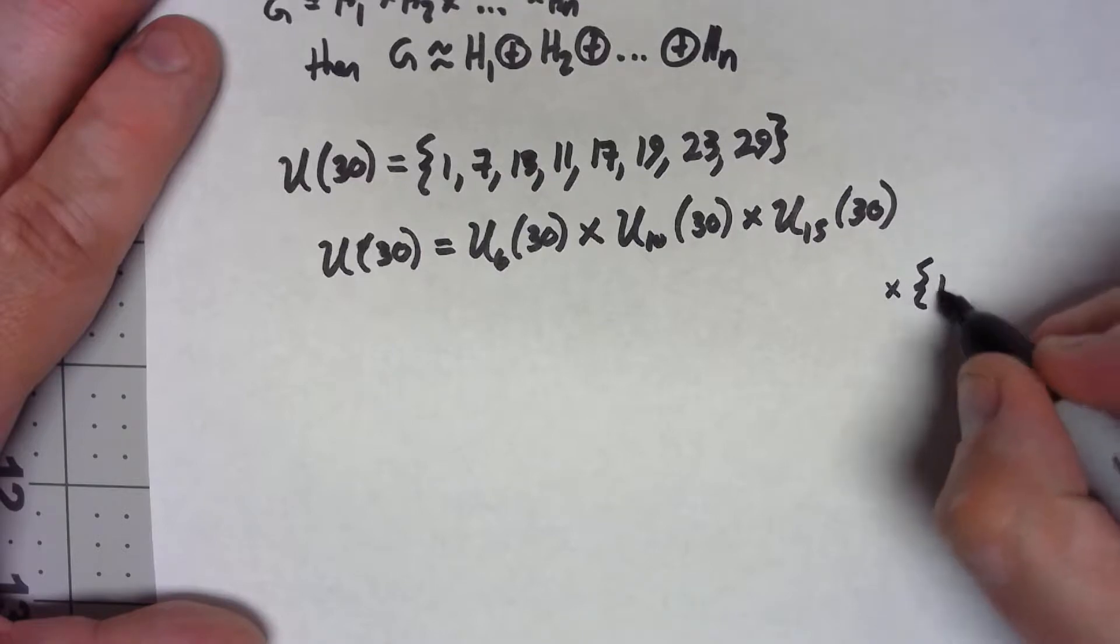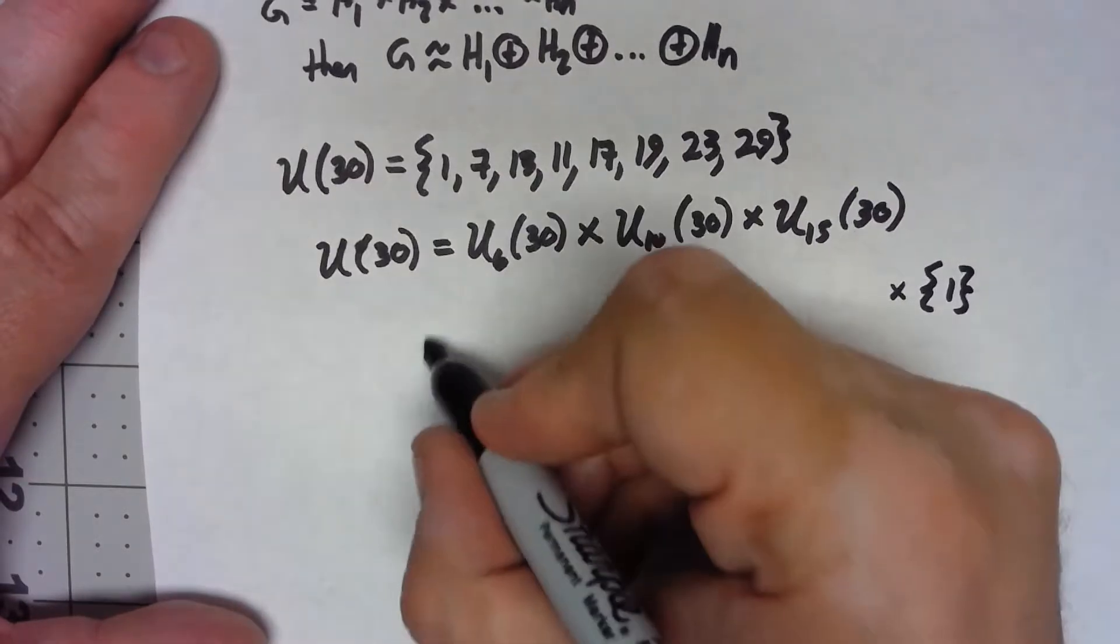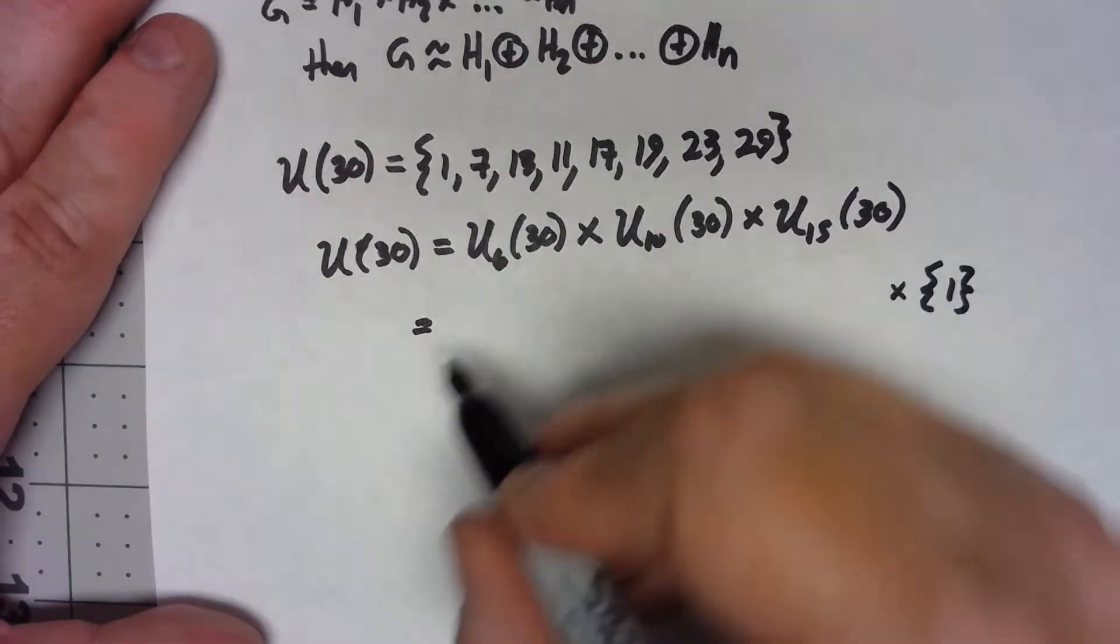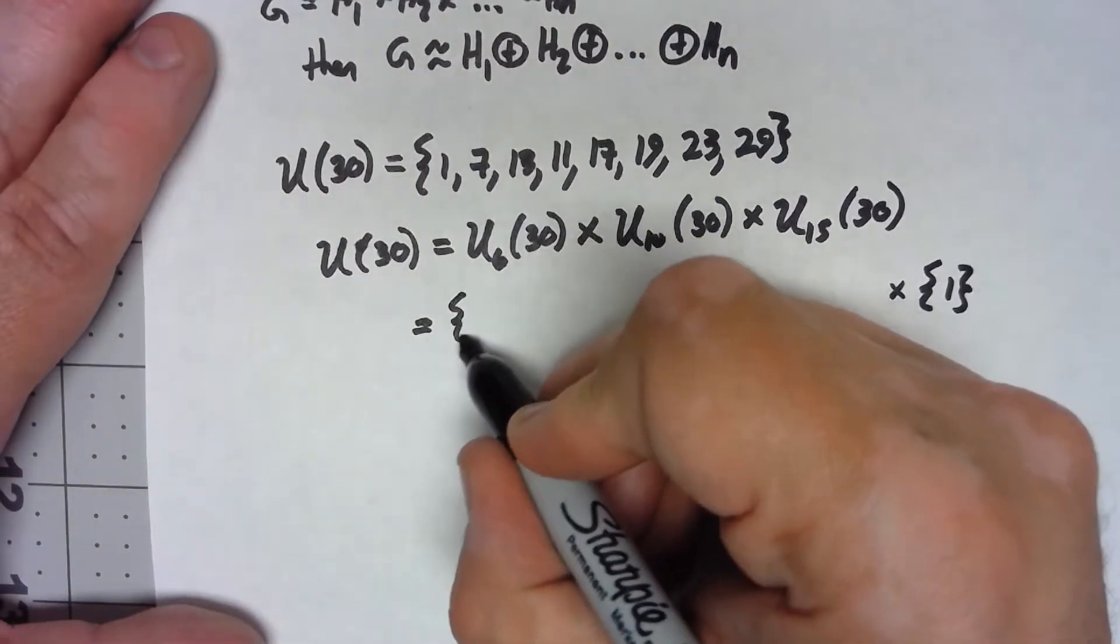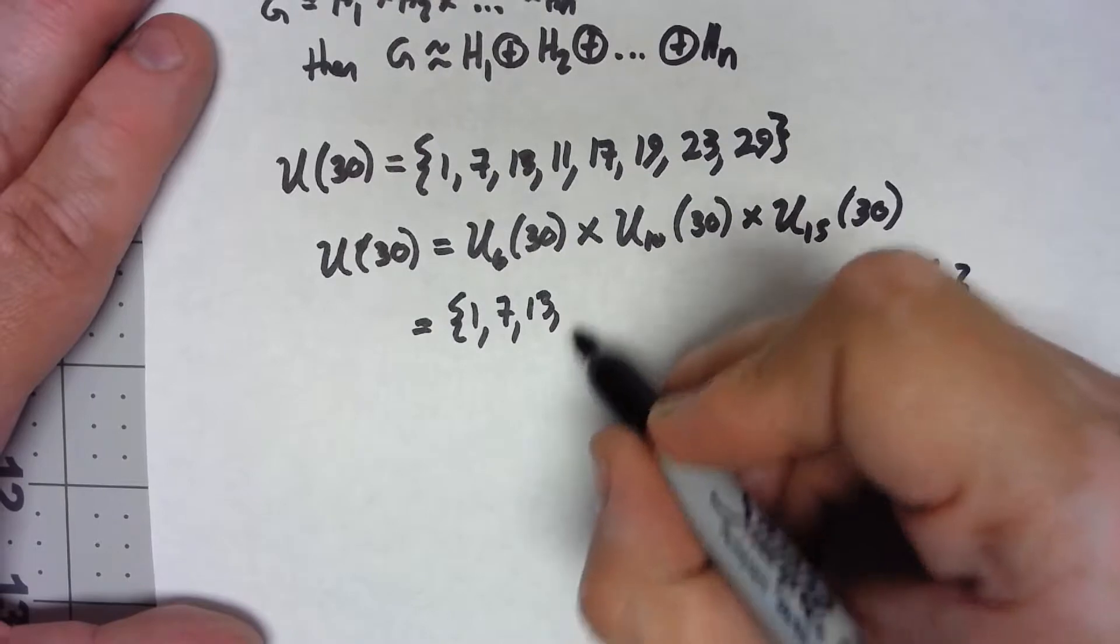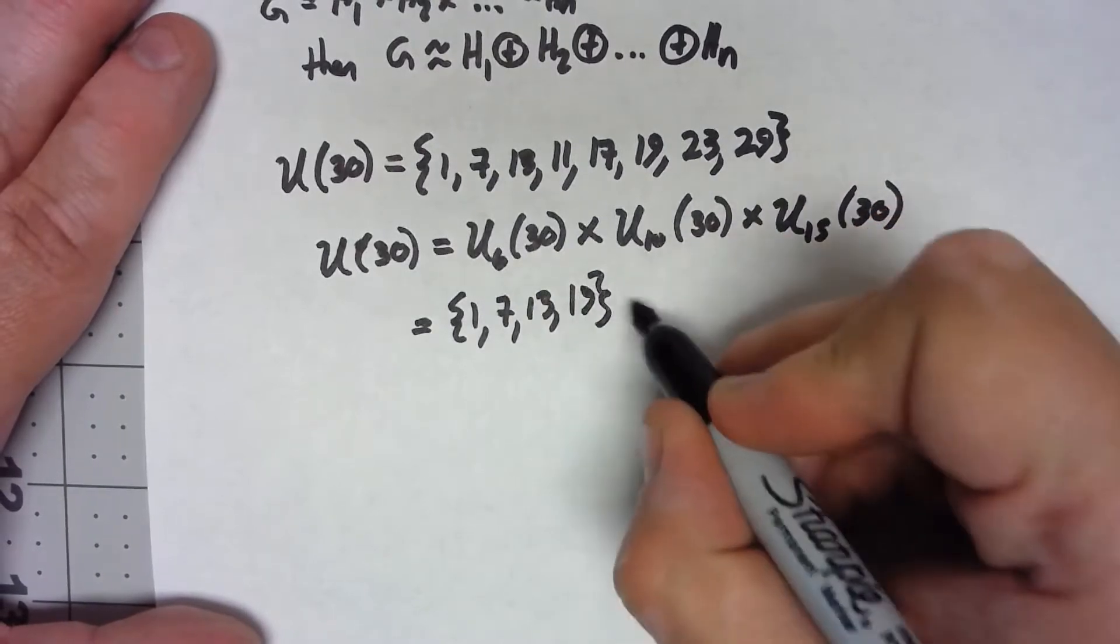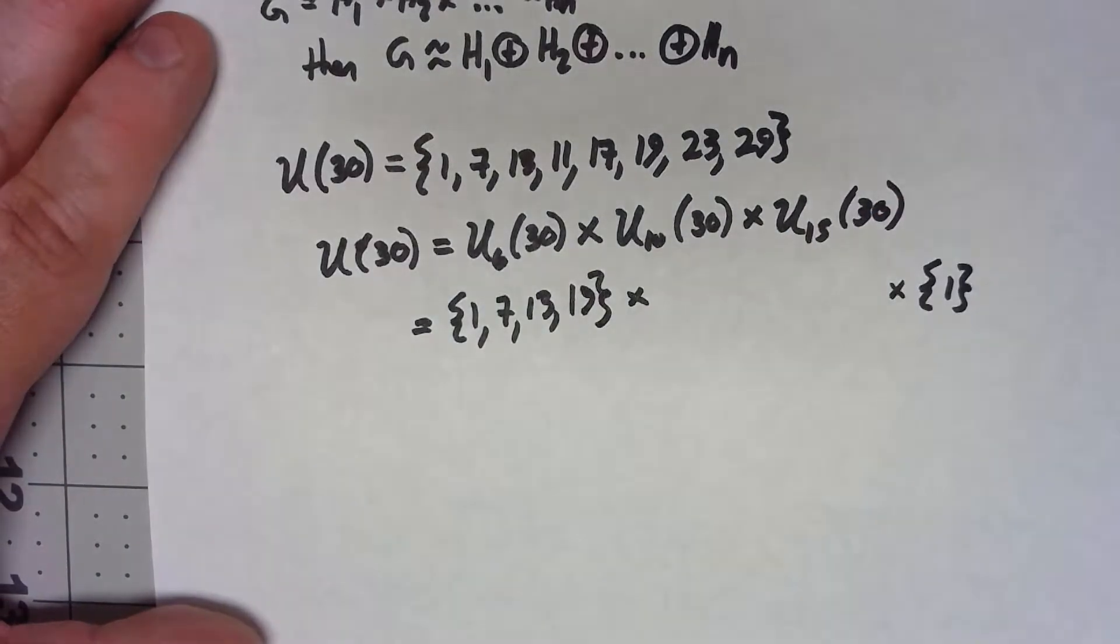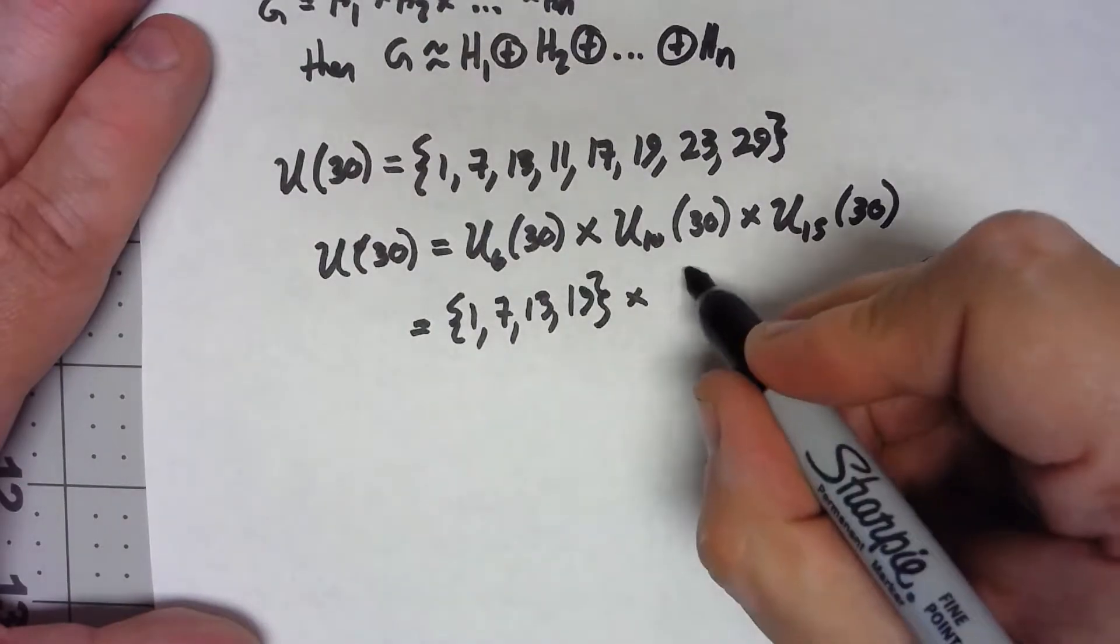Fortunately the other two are more interesting. U6(30) has 1, 7, 13, and 19 in it, and U10(30) has 1 and 11.